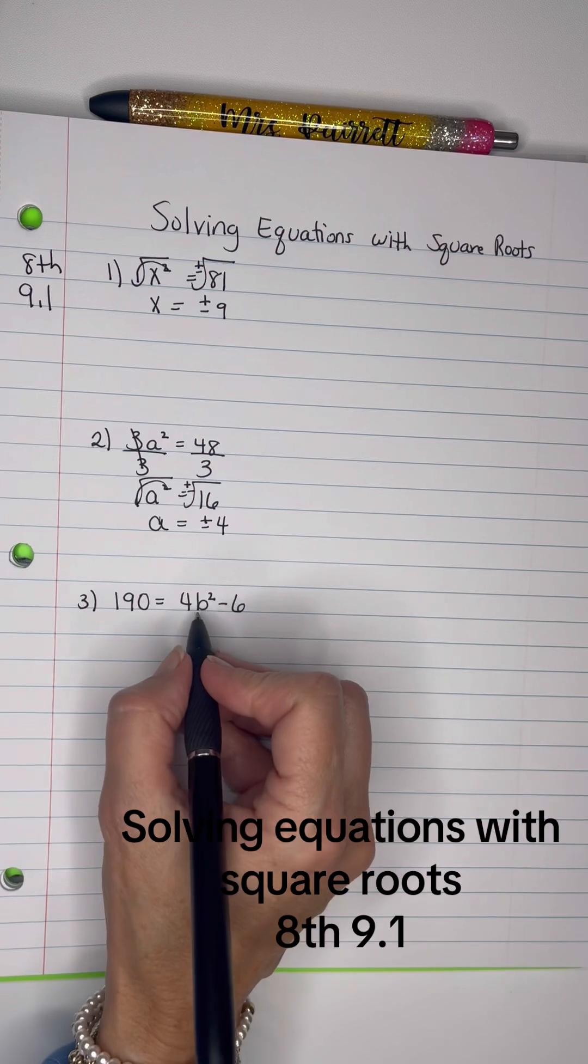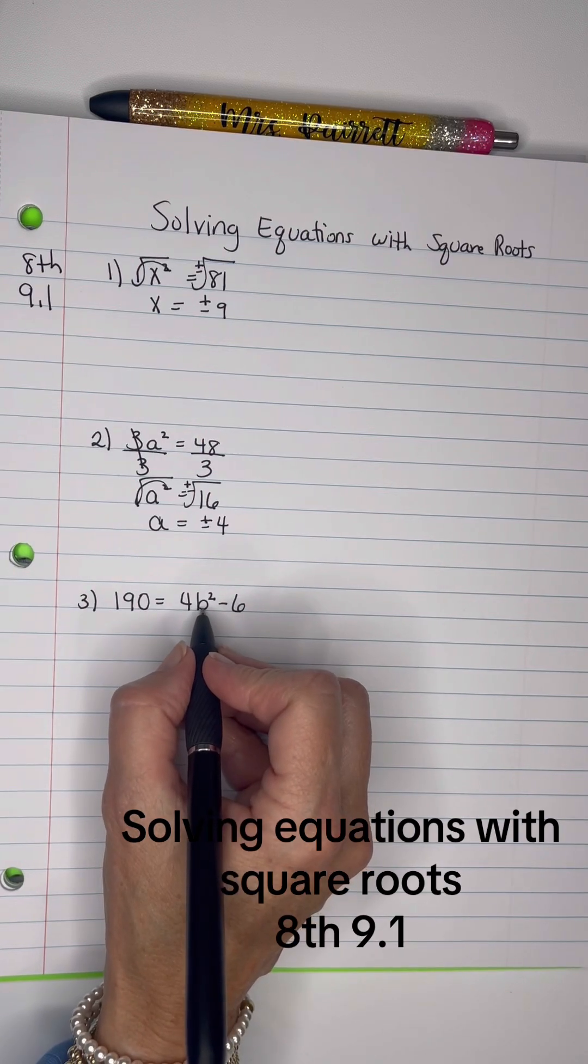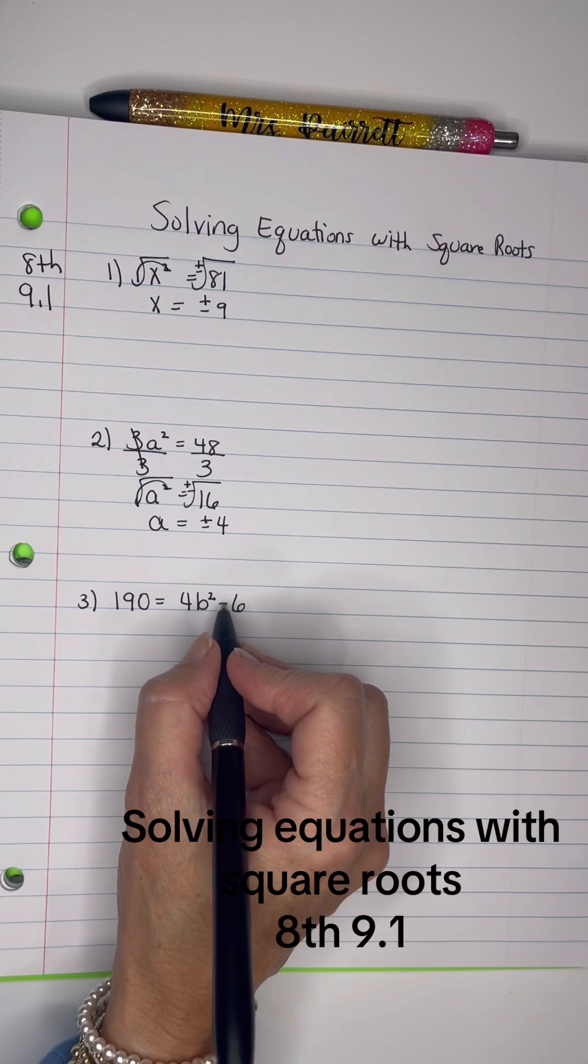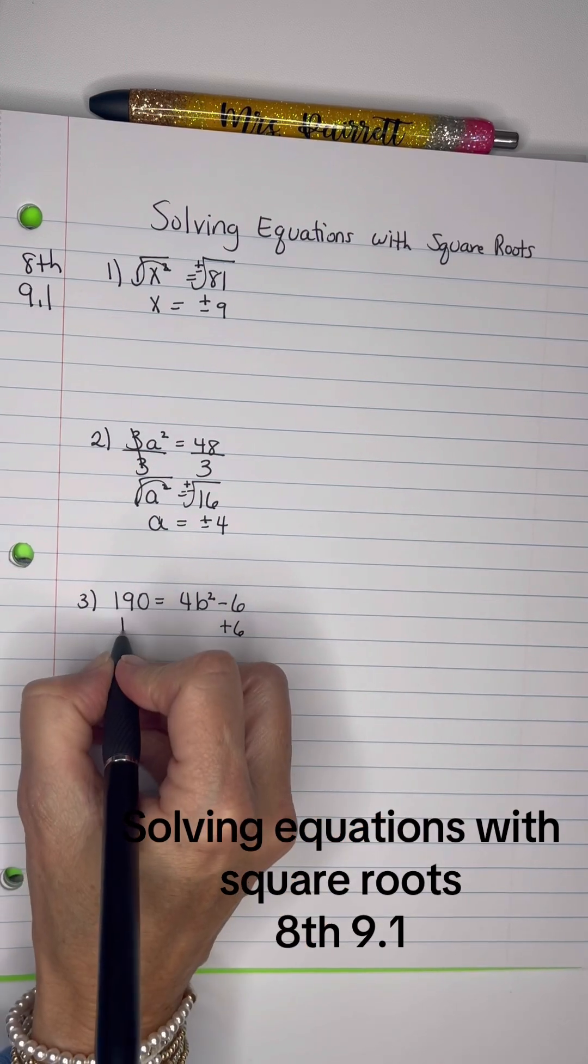Now on this one right here, we've got to isolate this b, so the first thing we're going to get rid of is this negative 6. We'll add 6 to both sides.